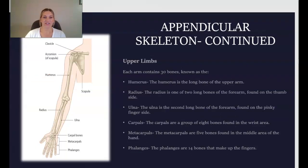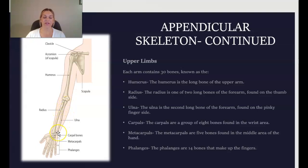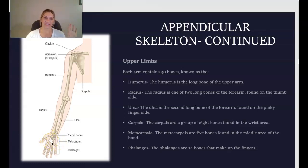Continuing with the appendicular skeleton, you have the upper limbs or arms. Each arm contains 30 bones. These include the humerus — the long bone of the upper arm — the radius, one of the two longer bones of the forearm found on the thumb side, and the ulna, the second long bone of the forearm found on the pinky side. Then you have the carpals — a group of eight bones in the wrist — the metacarpals — five bones in the middle area of the hand — and the phalanges — 14 bones that make up the fingers.